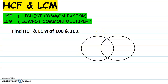Today we are going to learn HCF and LCM of numbers. HCF is highest common factor and LCM is lowest common multiple. Here is a question for you: find the HCF and LCM of 100 and 160.